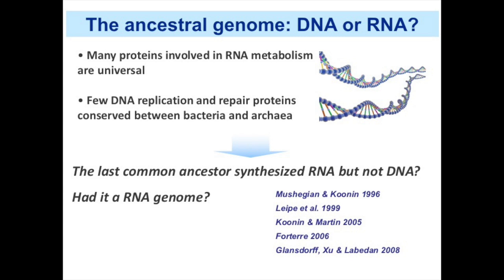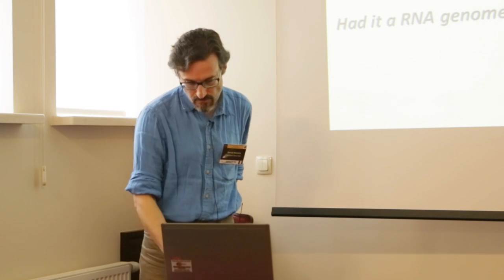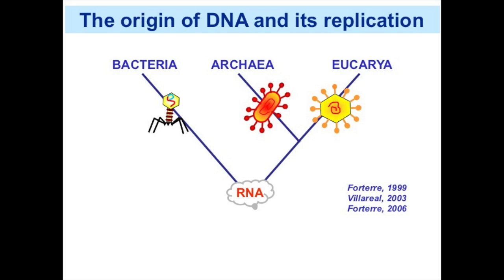The second point concerns the nature of the ancestral genome. Many genes in the ancestral list are involved in RNA metabolism, but very few in DNA replication and repair. This was interpreted by many authors as evidence that LUCA could synthesize RNA but not DNA, implying it had an RNA genome. To explain why all contemporary cells have DNA, Forterre and Villarreal proposed that DNA was transferred into primitive RNA-genome cells — primitive bacteria, archaea, and eukaryotes — through infection by different DNA viruses.